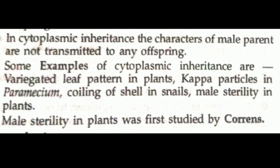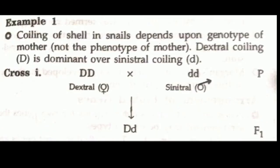The coiling of the shell in snails depends upon the genotype of the mother snail, not the phenotype of the mother. So the shell coiling depends on the genotype of the mother. Dextral coiling (capital D) is dominant over sinistral coiling (small d). Dextral means coiling towards the right, and sinistral means coiling towards the left.